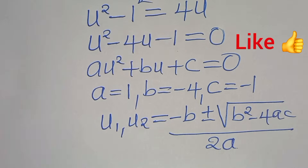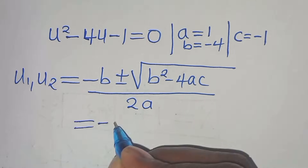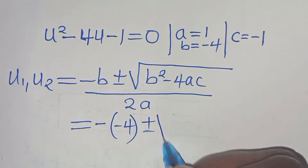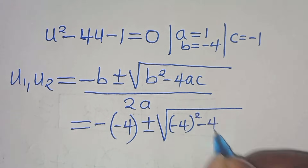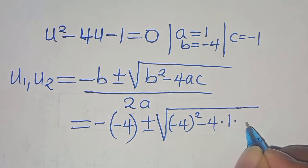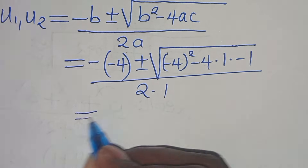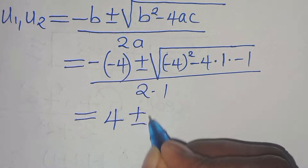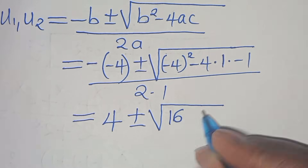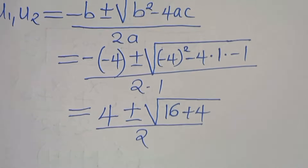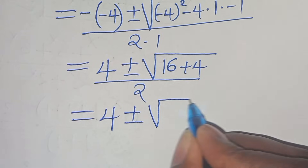Applying the quadratic formula: u equals minus b plus or minus the square root of b squared minus 4ac, all divided by 2a. Substituting our values: we get minus(minus 4) plus or minus the square root of (minus 4) squared minus 4 times 1 times (minus 1), all divided by 2 times 1.